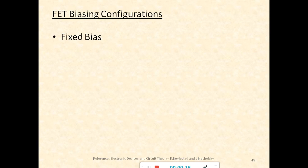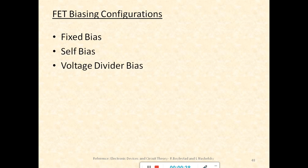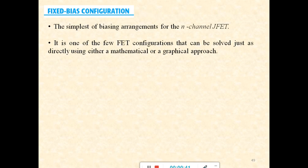In the previous class we began with the introduction on FET biasing configurations. The first type was fixed bias configuration — we saw how a fixed bias looks, how to obtain the quiescent point based on the transfer characteristics and the network, and how to obtain the solution. The second type is self-biased configuration and the third is voltage divider bias configuration.